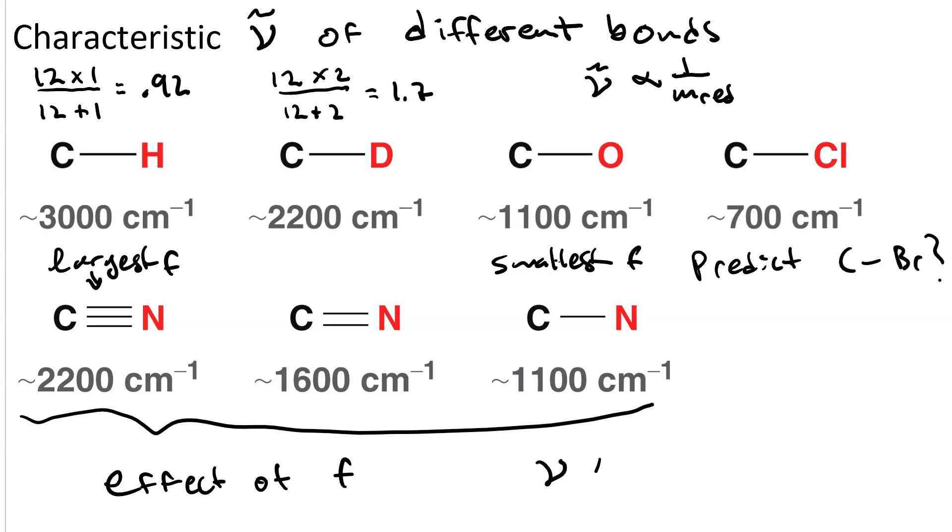And since wavenumber is directly proportional to F, it makes sense that the strongest bond, C-N triple bond, has the highest wavenumber, and the weakest bond, C-N single bond, has the lowest wavenumber.